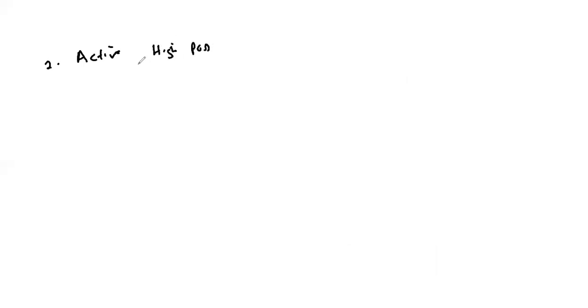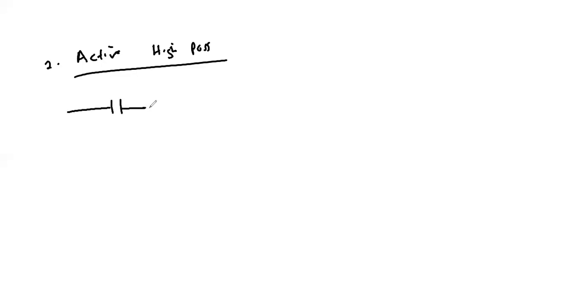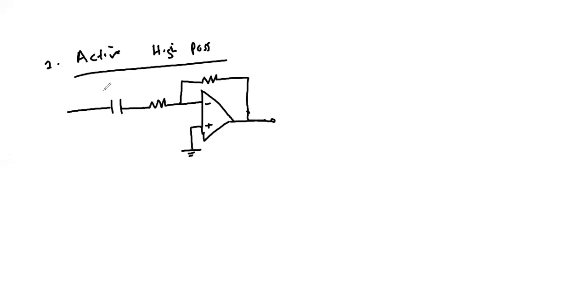Next we look at the active first-order high pass filter. The simplest active high pass filter uses an operational amplifier with RC components. It is configured with a series resistor-capacitor network on the forward path and a resistor in the feedback path. The operational amplifier is connected in its inverting mode.